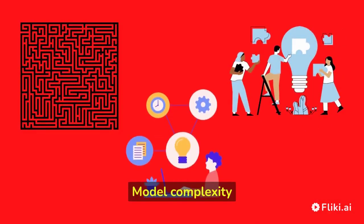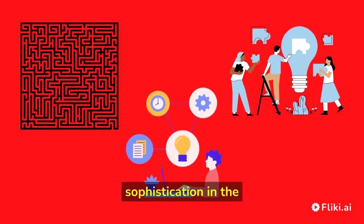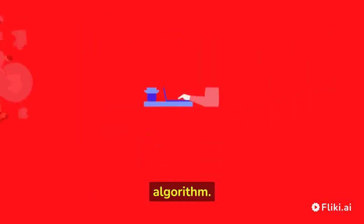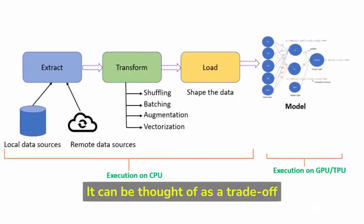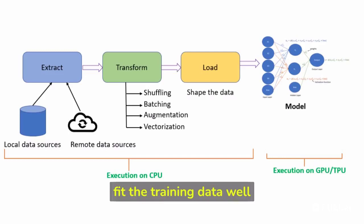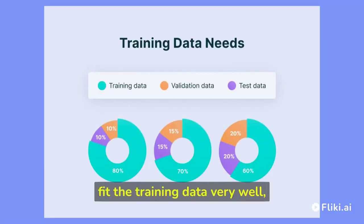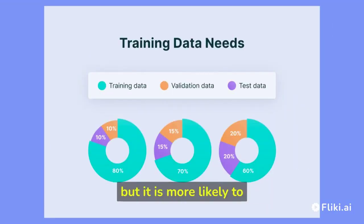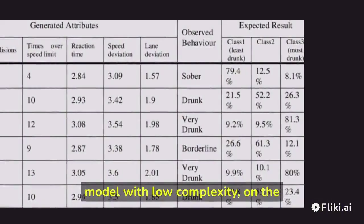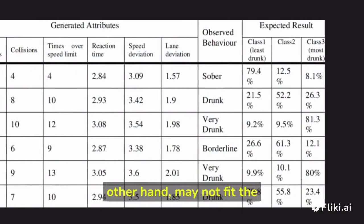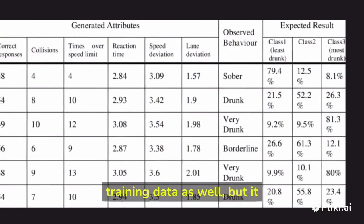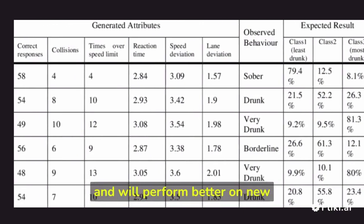Model complexity refers to the level of detail and sophistication in the mathematical representation of a supervised machine learning algorithm. It can be thought of as a trade-off between the ability of a model to fit the training data well and its ability to generalize to new, unseen data. A model with high complexity is able to fit the training data very well, but it is more likely to overfit, meaning that it will perform poorly on new, unseen data. A model with low complexity, on the other hand, may not fit the training data as well, but it is less likely to overfit and will perform better on new data.